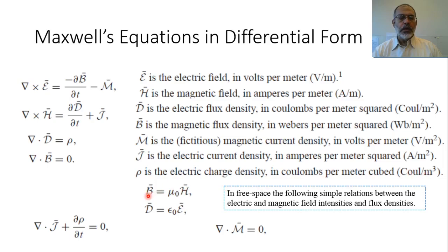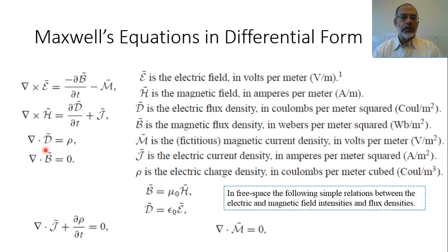B is the magnetic flux density, related to the magnetic field: B equals μ₀H, where μ₀ is the free space permeability. This relation is valid for free space. In a magnetic material, it would be B equals μH, where μ is the permeability of the medium. Similarly, the relation between electric flux density and electric field is D equals ε₀E, where ε₀ is the permittivity of free space. In another medium, it would be D equals εE, where ε is the permittivity of that medium.